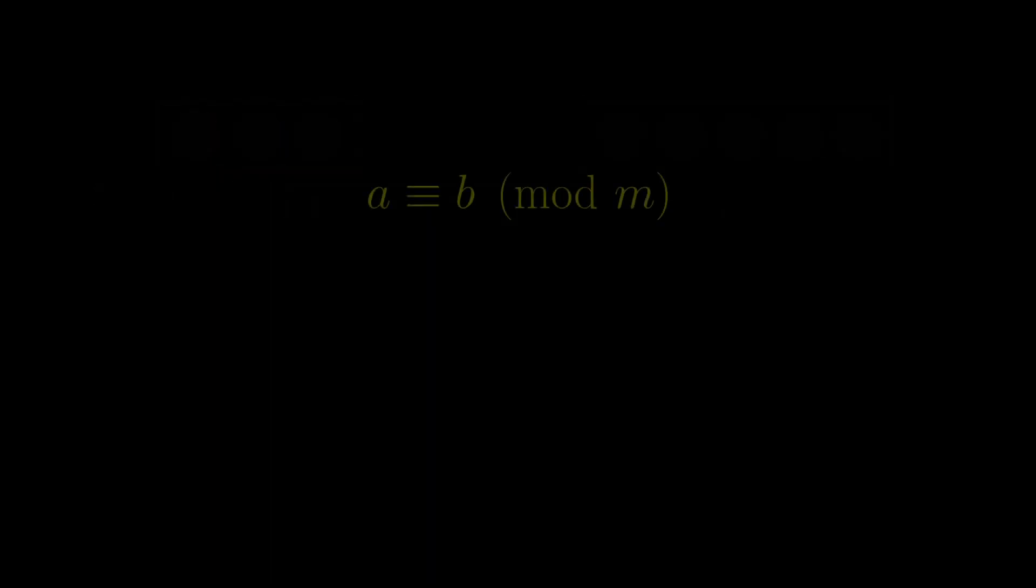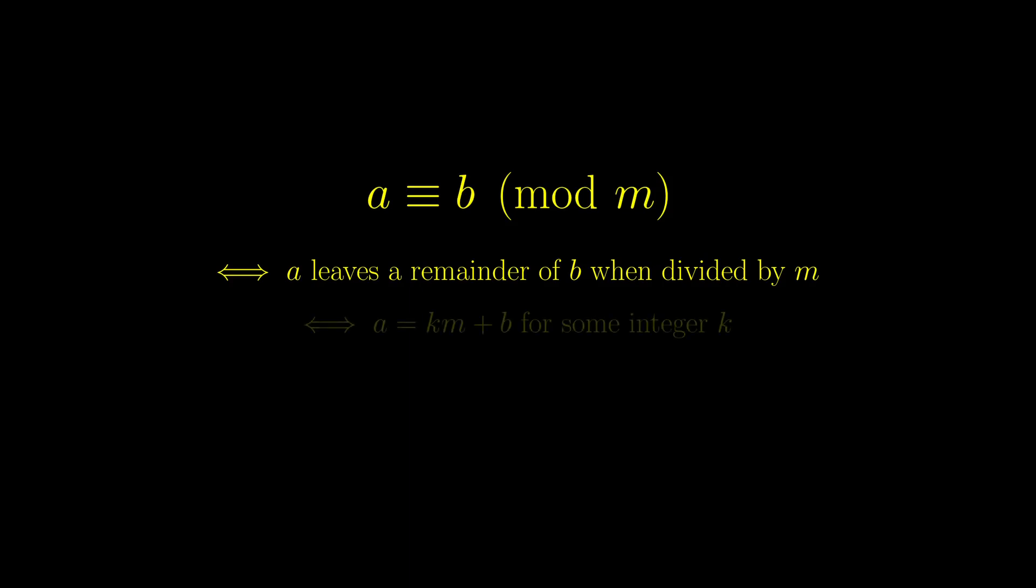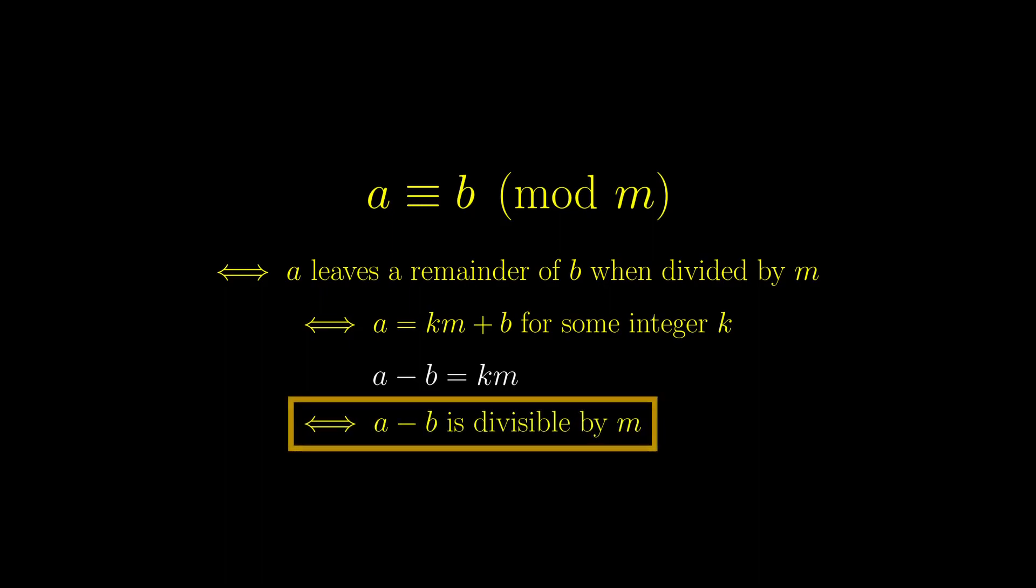We first introduce a notation that will make our discussion more systematic. We write a congruent to b modulo m if a leaves a remainder of b when divided by m. The notion of remainder means a equals km plus b for some integer k. If we rearrange this equation, a minus b equals km, so a minus b is divisible by m.